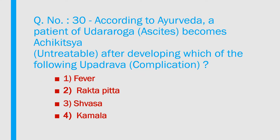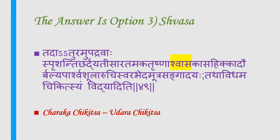Question number 30: According to Ayurveda, a patient of udara roga becomes achikitsya (untreatable) after developing which of the following upadrava (complication)? 1) Fever, 2) Rektapitta, 3) Shwasa, 4) Kamala. Answer is option 3 — Shwasa. The verse lists complications: adisara, tamaka, trishna, shwasa, kasa, hikka, daurbalya, parshwa shula, and others; presence of shwasa makes it krichikitsyam. Reference: Charaka Chigilsa Sthana, Udara chigilsa.